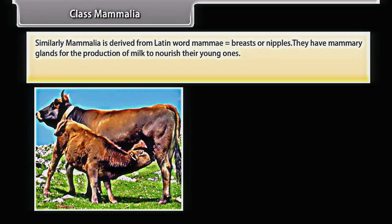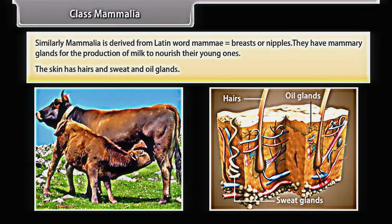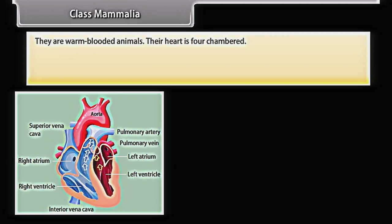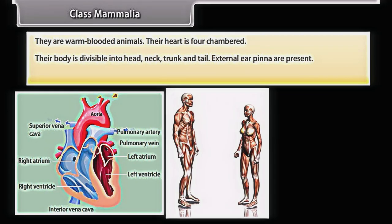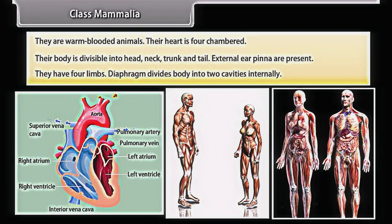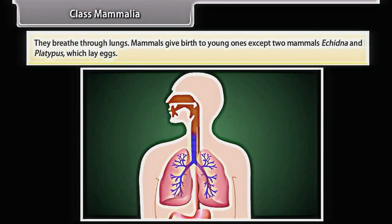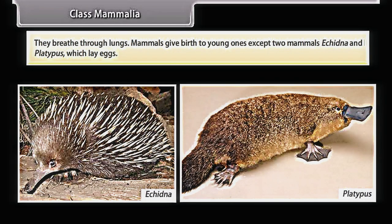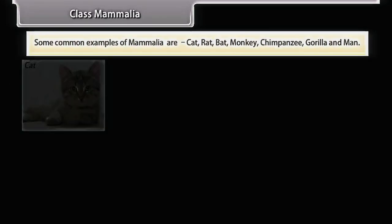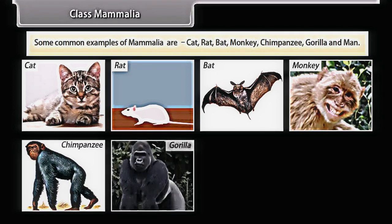Mammalia is derived from Latin word 'mamma', meaning breasts or nipples. They have mammary glands for the production of milk to nourish their young ones. Their skin has hairs, sweat, and oil glands. They are warm-blooded with a four-chambered heart. Their body is divisible into head, neck, trunk, and tail. External ear (pinna) is present. They have four limbs. The diaphragm divides the body into two cavities internally. They breathe through lungs. Mammals give birth to young ones, except Echidna and Platypus which lay eggs. Common examples are cat, rat, bat, monkey, chimpanzee, gorilla, and man.